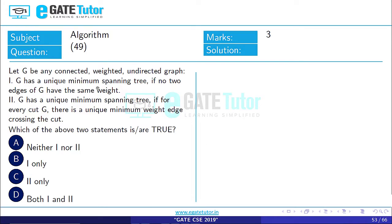Here in statement first, it says that the graph G has a unique minimum spanning tree if no two edges of G have the same weight. That means all the edges are distinct.